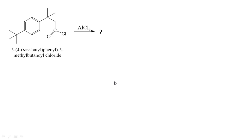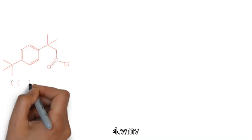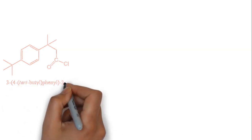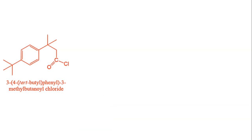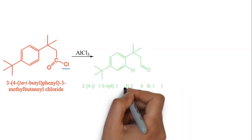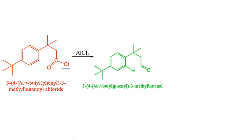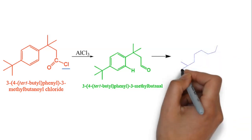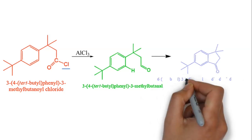Next, let us take the reactant 4-butylphenyl-3-methylbutanyl chloride. If there is a substituent here, in the presence of AlCl3, how does cyclization occur? On removing Cl⁻ in the presence of AlCl3, the similar mechanism of Friedel-Crafts reaction proceeds. The cyclization gives an intermediate butanol, and intramolecular cyclization gives a 5-membered ketone as the product.